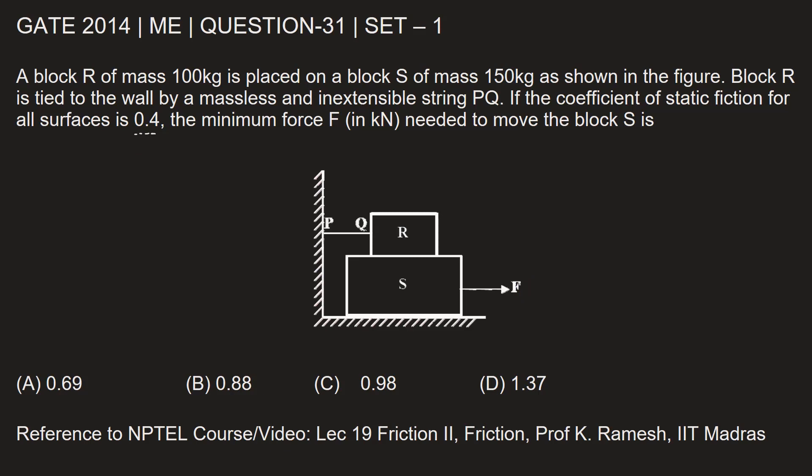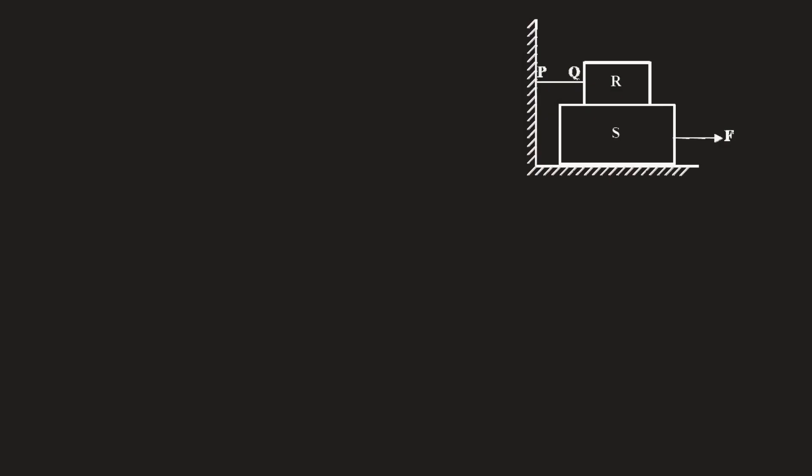Let's first write down the given information. So R has a mass of 100 kgs and S has a mass of 150 kgs and these surfaces, all of the interacting surfaces have a static coefficient of friction to be 0.4.